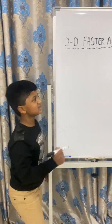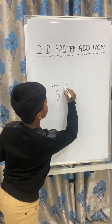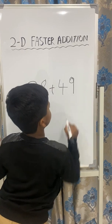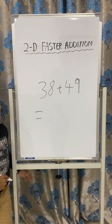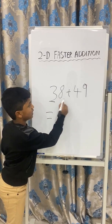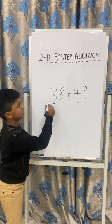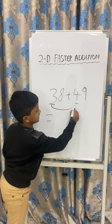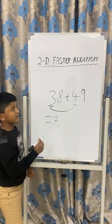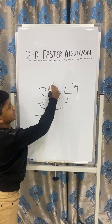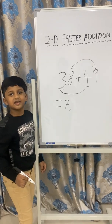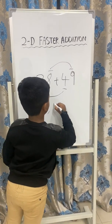Suppose your example is 38 plus 49. Here we will solve the sum. First, we should add the tens place. That is, 3 tens plus 4 tens gives us 7 tens. So we write 7. Then we add the ones place. That is, 8 ones plus 9 ones gives you 17 ones. We write down 17.